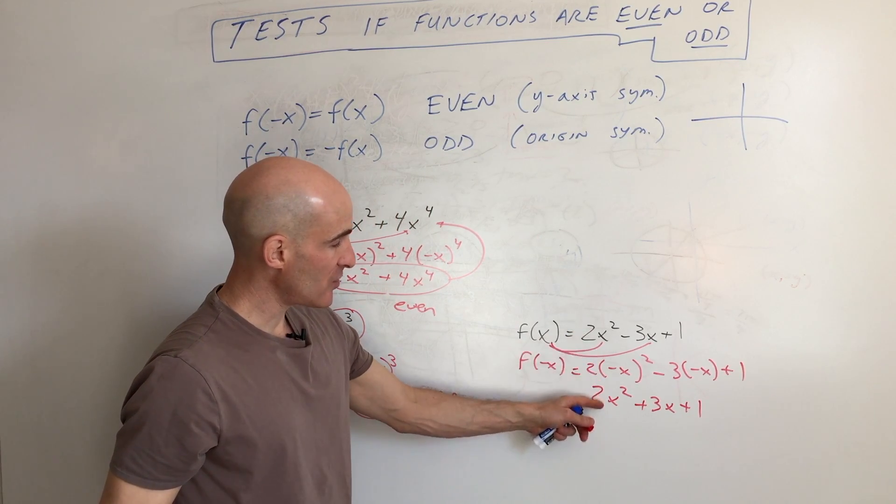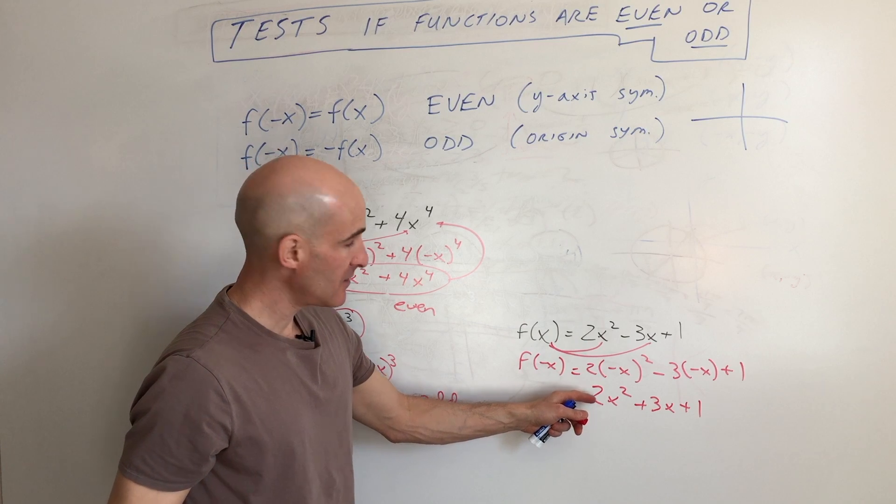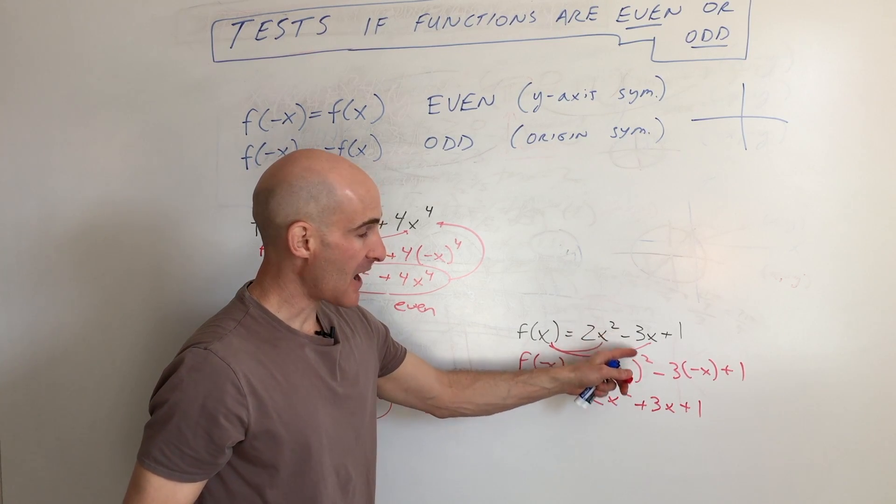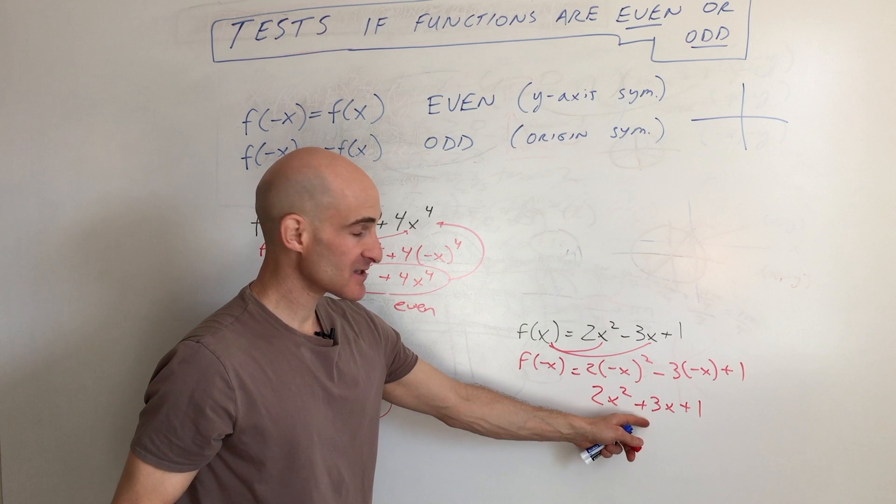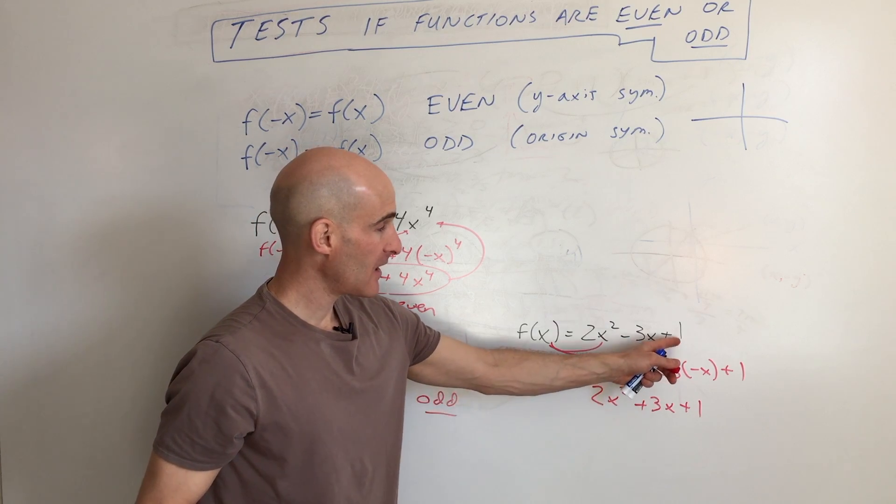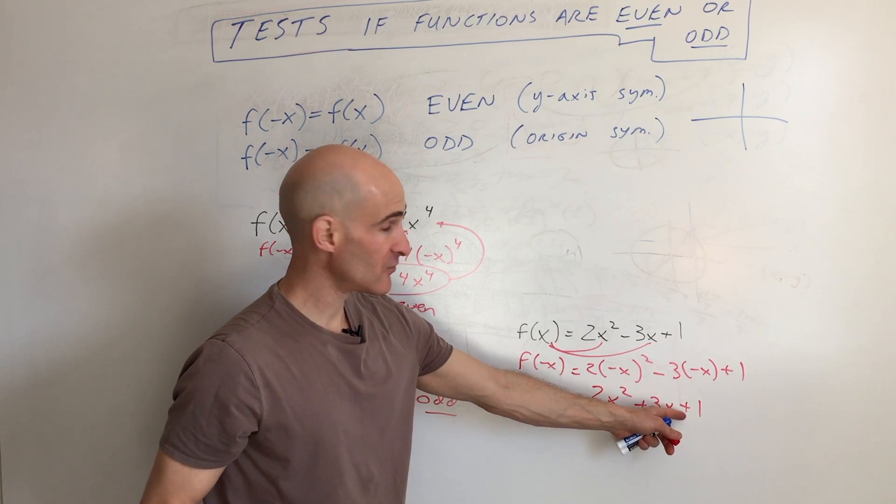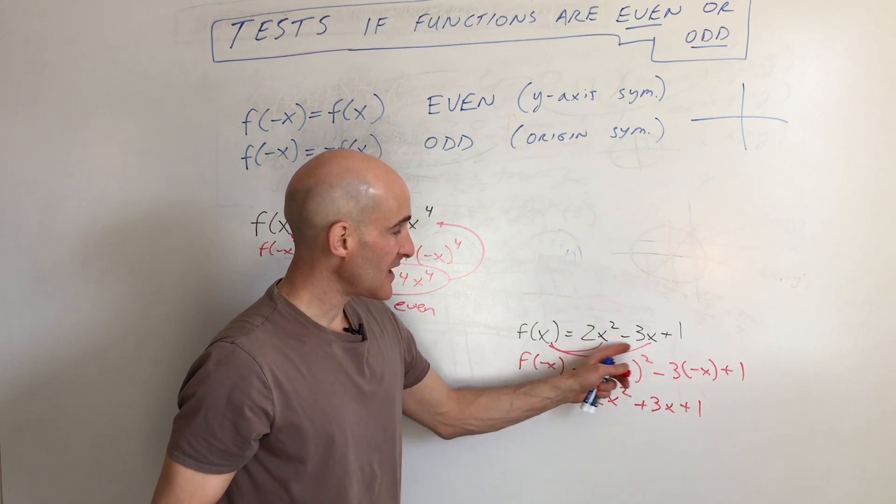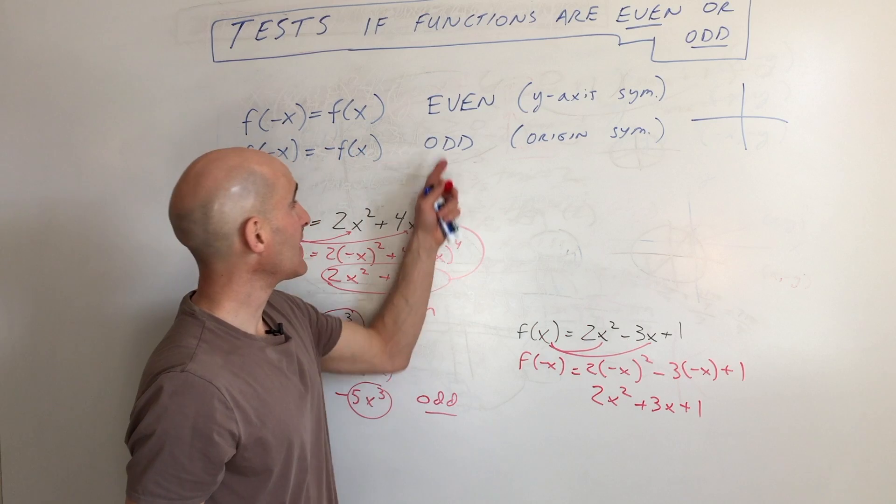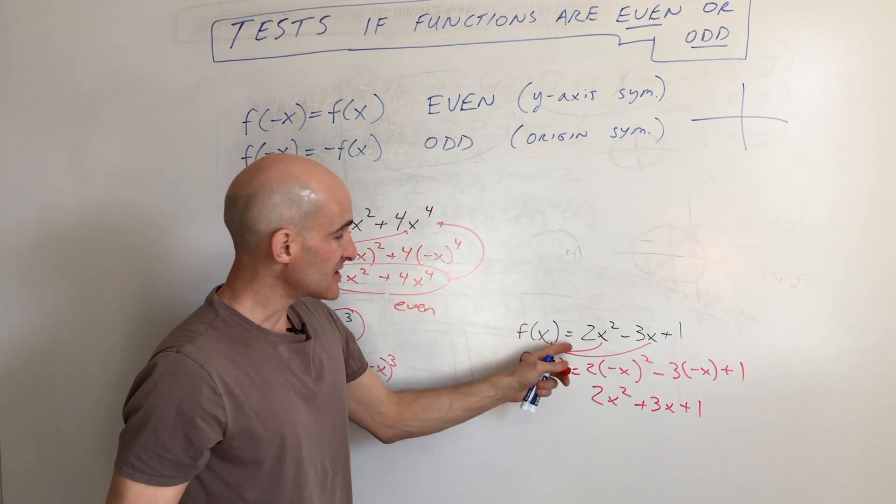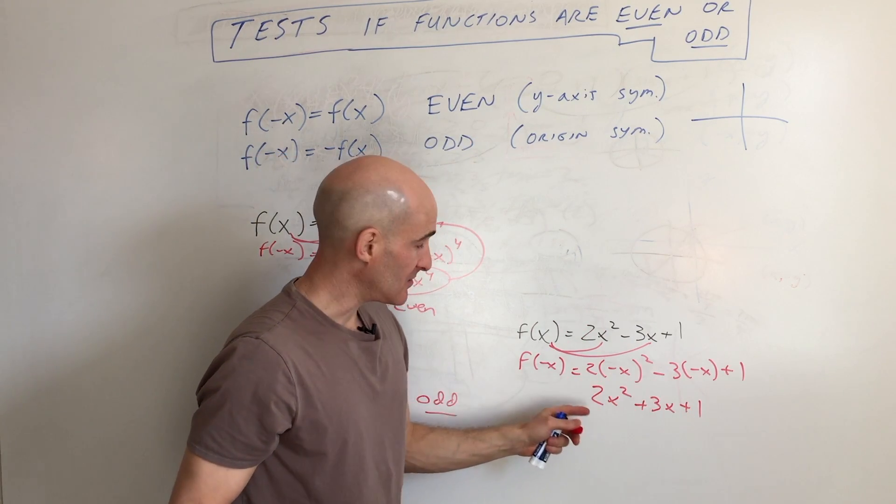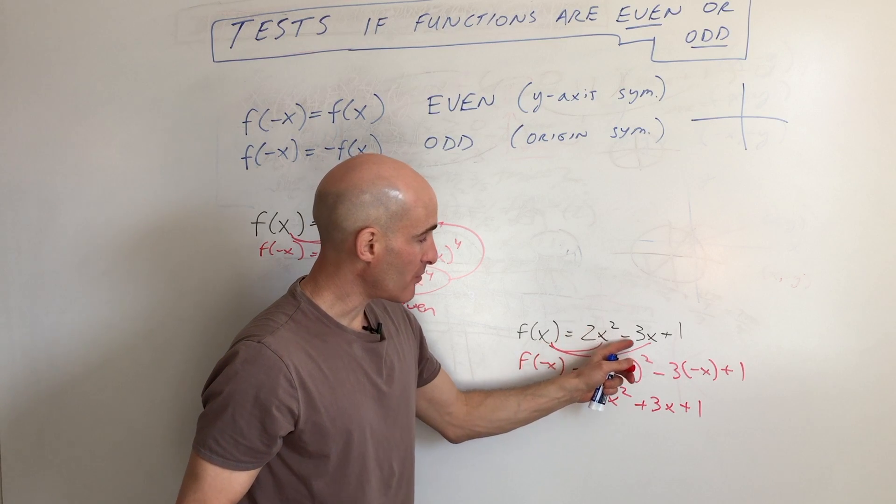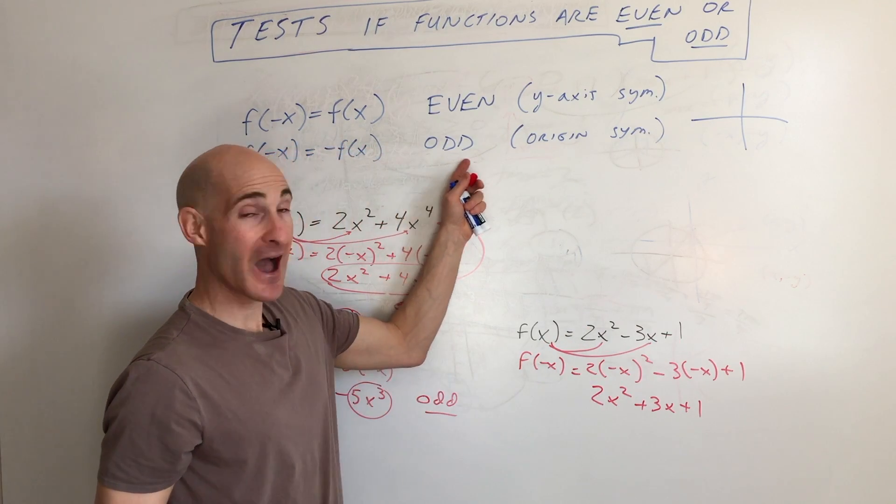So let's look at what happened here. This one stayed the same. See, 2x squared, they're both positive. This one, it's the opposite. This was a negative 3x, this is positive 3x. And this is positive 1, this one stayed the same. This equation is not the same as the original one. So it's not even. The signs are not all the opposite. This would be negative 2x squared, positive 3x, negative 1. So it's not odd.